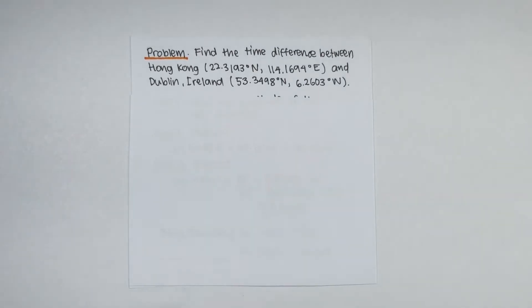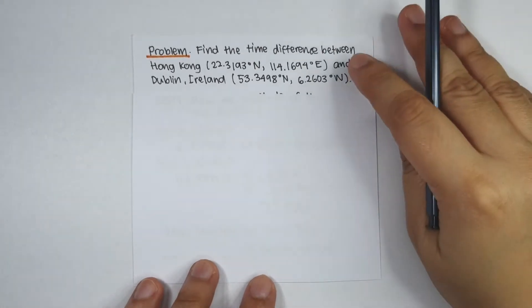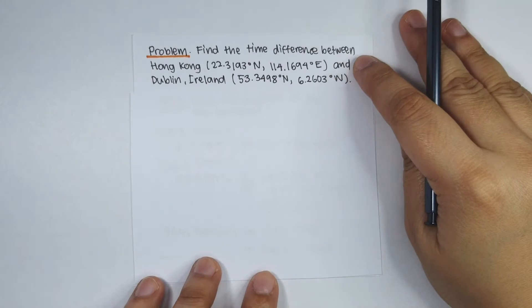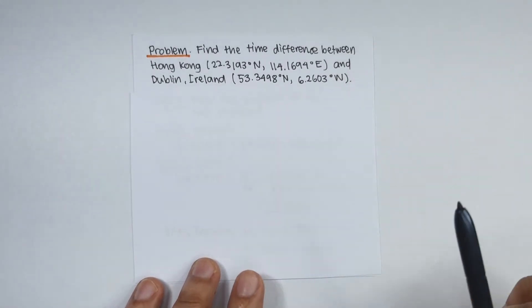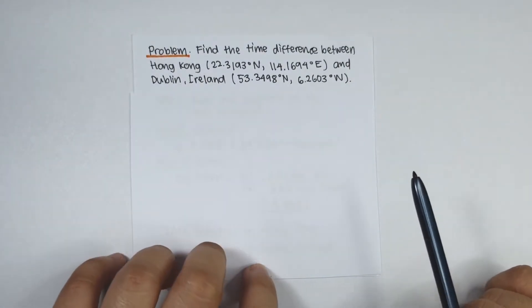Now let's learn how to solve the time difference between two locations, given that one is at east and one is at west.